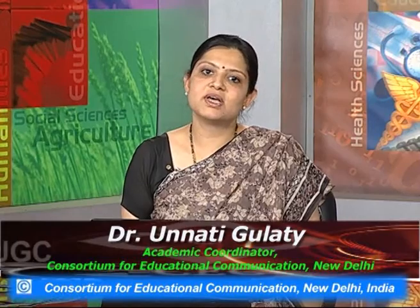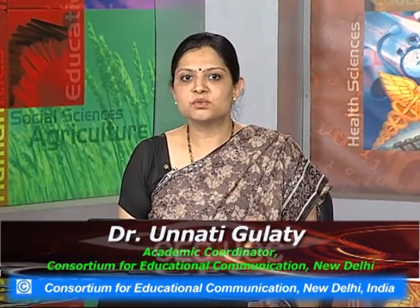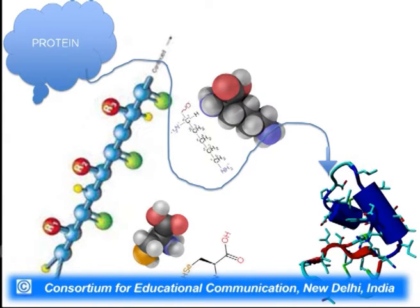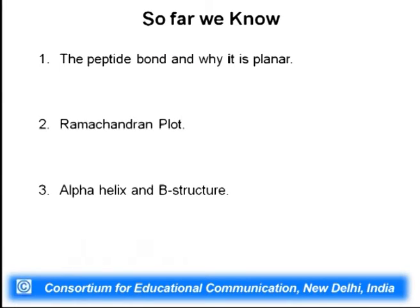We were talking about introduction to proteins and had discussed the primary structure, the two basic secondary structures, and also the turns. We are now moving to the tertiary structure, the third level of hierarchy of protein structure. We learned why the peptide bond is planar and looked at the Ramachandran plot where permissible and non-permissible phi-psi angles are shown, accounting for rigidity and planarity of the peptide bond.